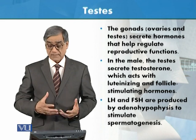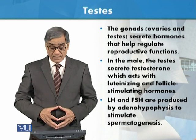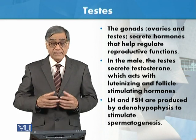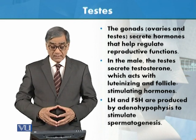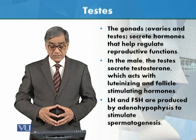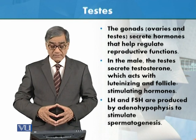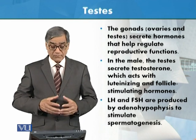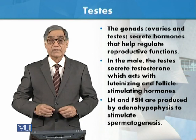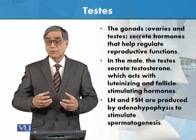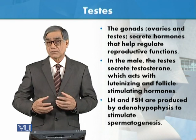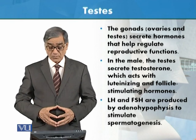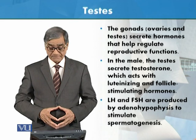The primary hormone is usually testosterone. In the male, the testes secrete testosterone, which acts with the luteinizing hormone and follicle stimulating hormone. These hormones are produced by the pituitary gland, particularly the adenohypophysis.